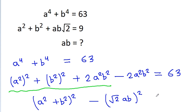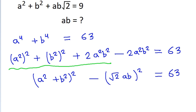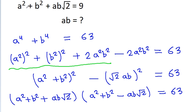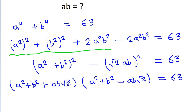We get (a² + b²)² - (√2·ab)² = 63. Recognizing this as a difference of squares, a² - b² = (a+b)(a-b), we get (a² + b² + ab√2)(a² + b² - ab√2) = 63. We are given that a² + b² + ab√2 = 9.